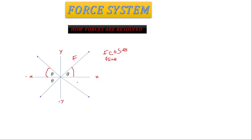For the last quadrant — the fourth quadrant — x is positive and y is negative. When resolving, the x component gives positive F cos θ, and the y component gives negative F sin θ.